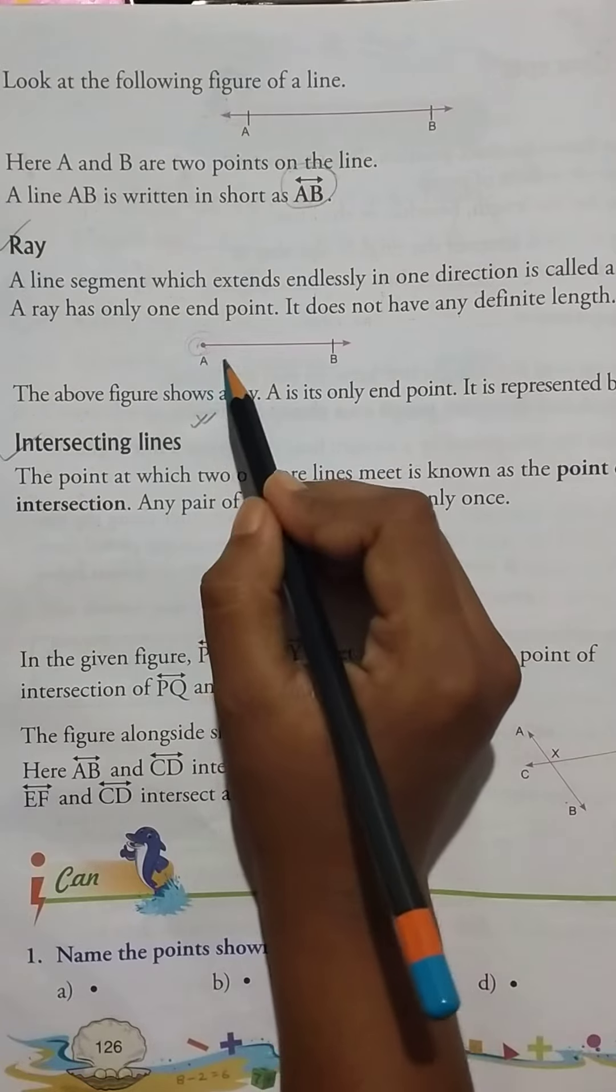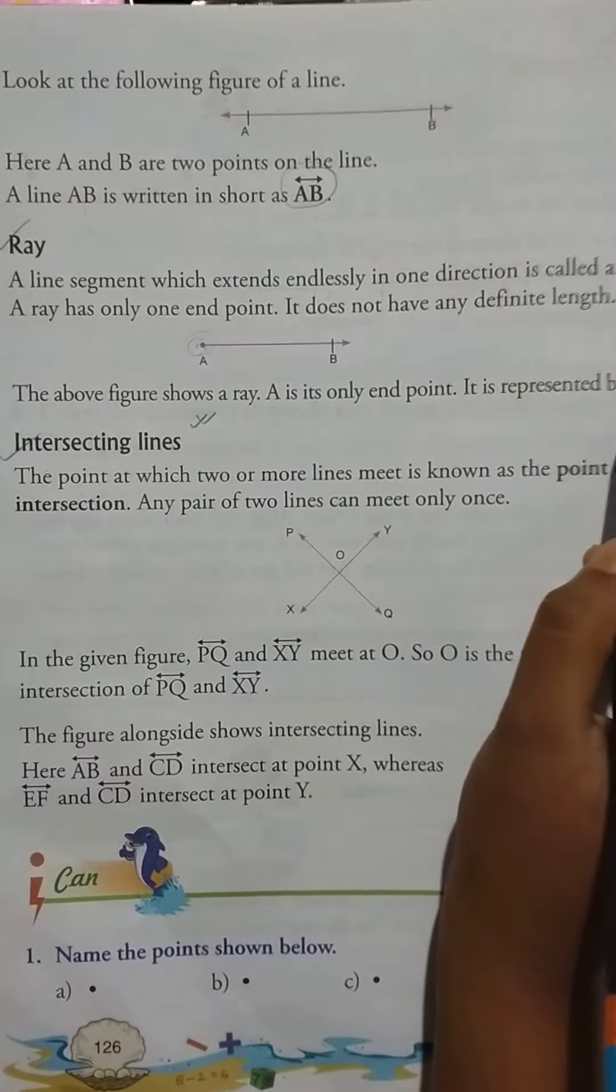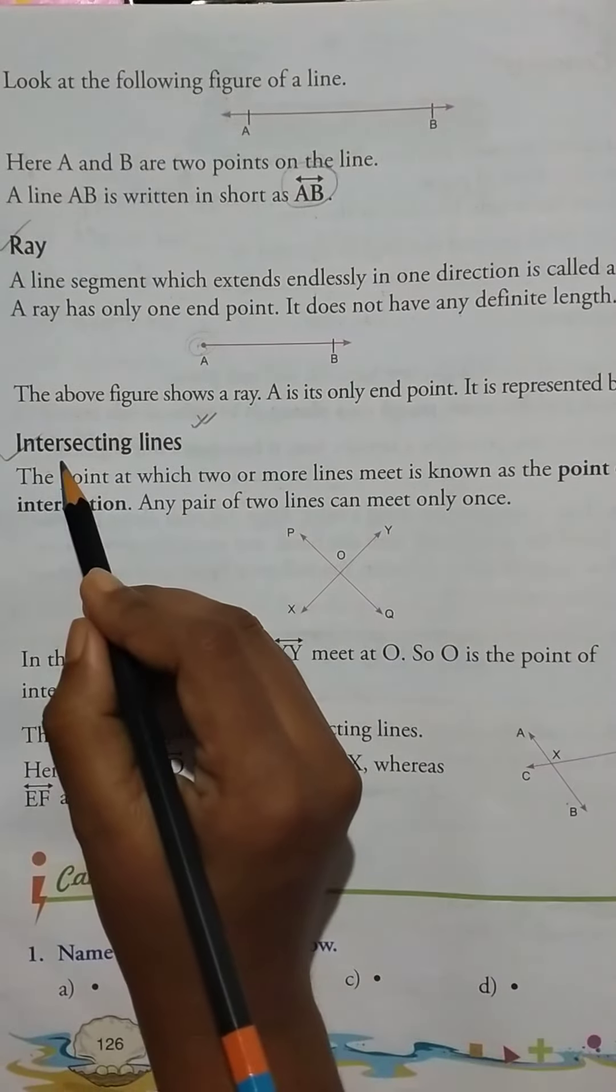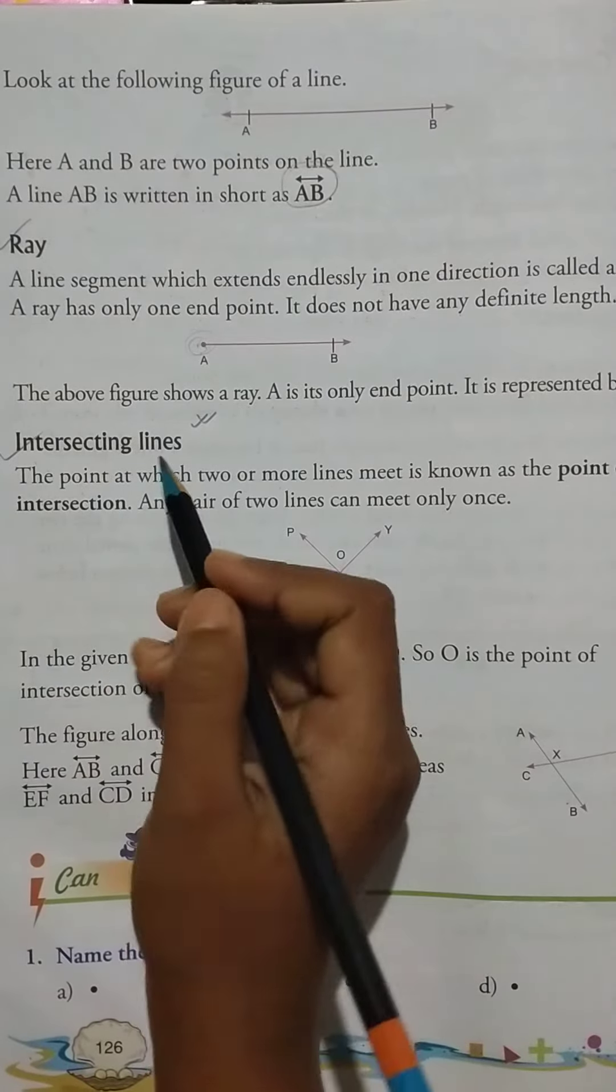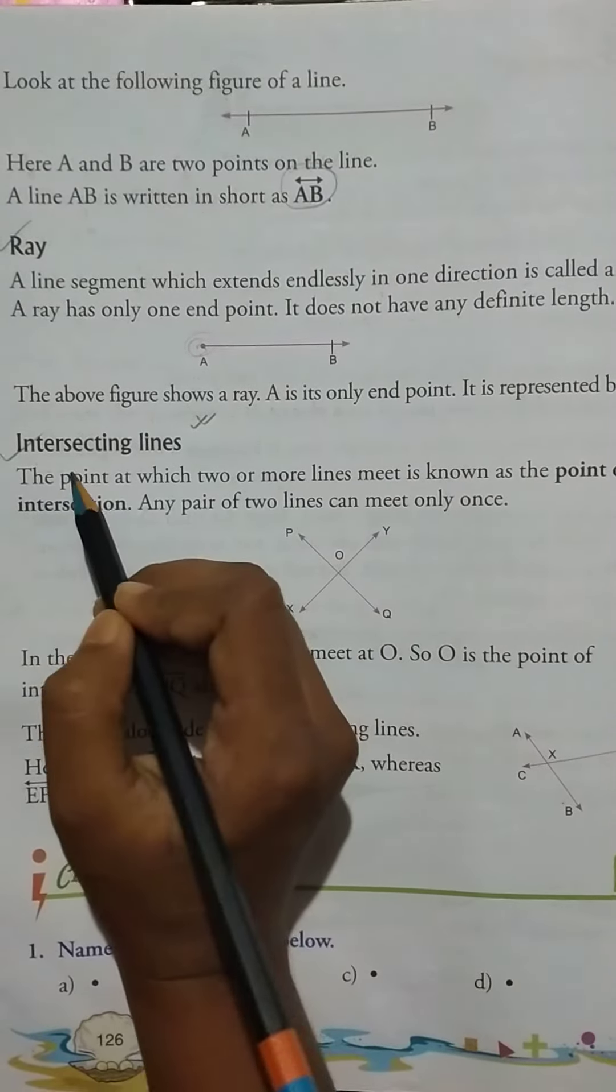It is represented by AB and intersecting lines. Then intersecting lines.